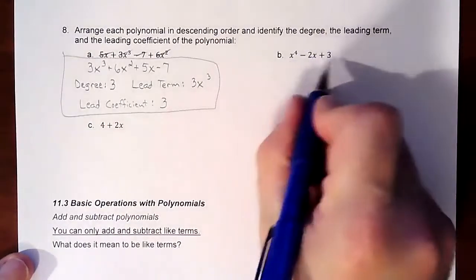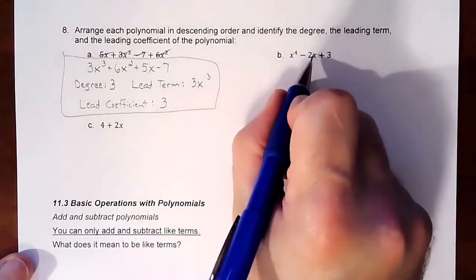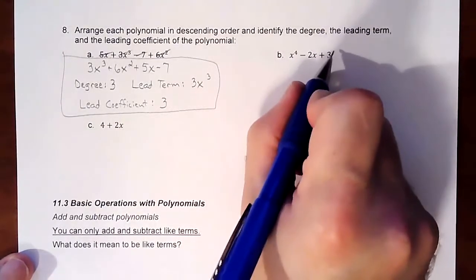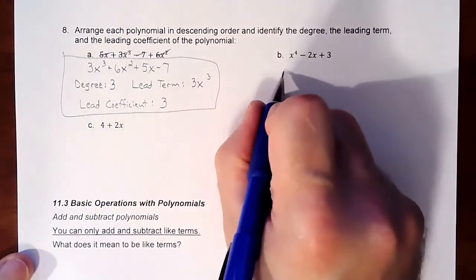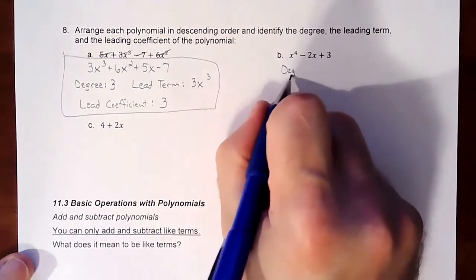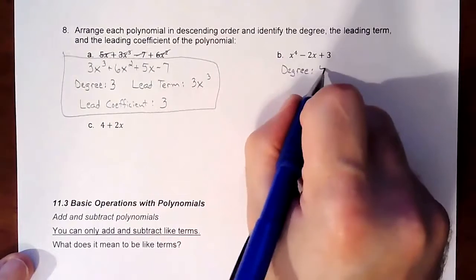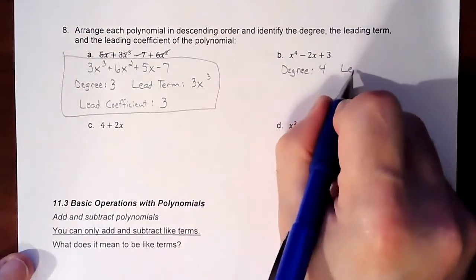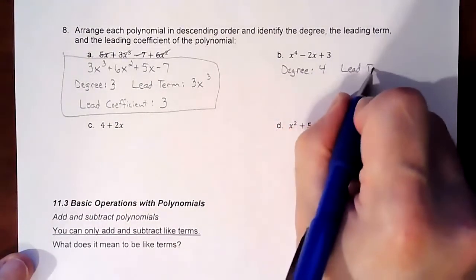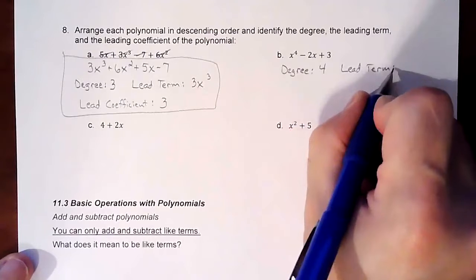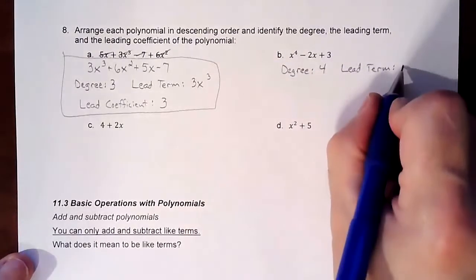So on this one, it's already in order, because you have highest power, and then x to the first, and then no power at all. So that part's good. Degree is 4.